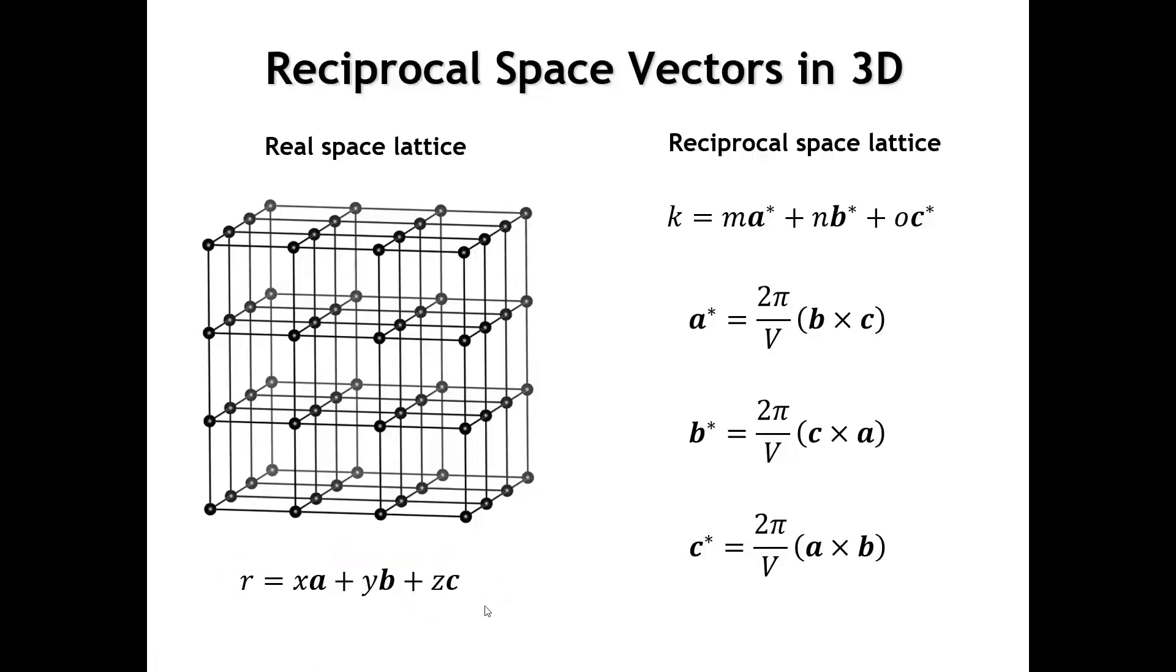In reciprocal space, there's also going to be three reciprocal space lattice vectors: a*, b*, and c*. The a* vector is equal to the cross product of the b and c real space lattice vectors times 2π divided by the volume of the unit cell.